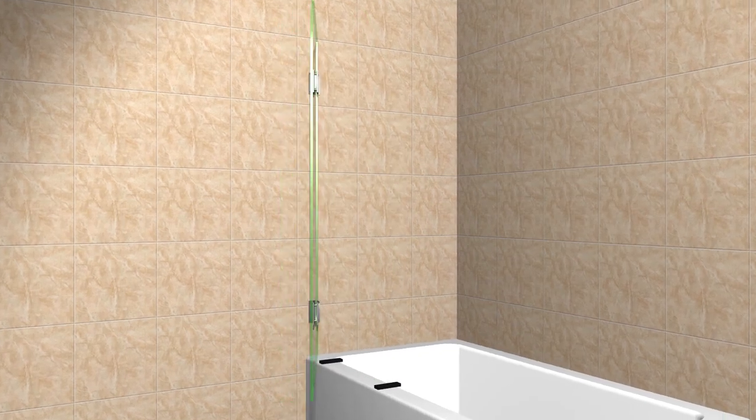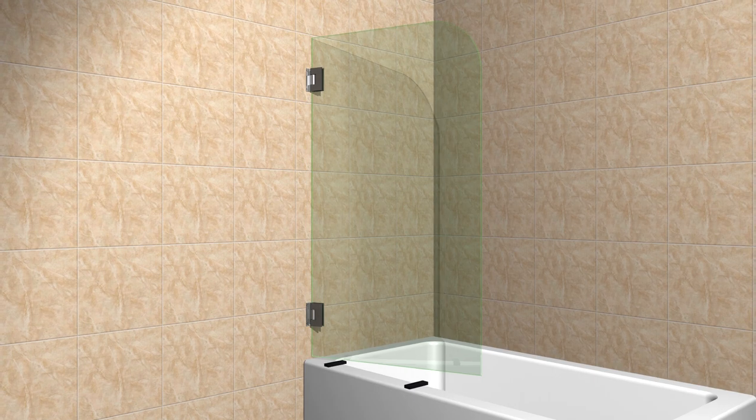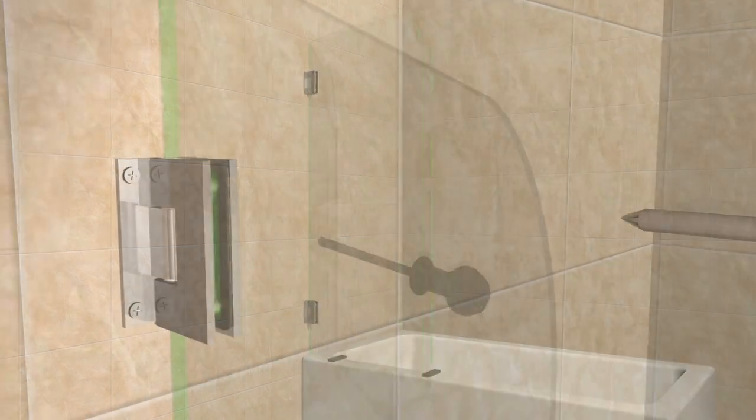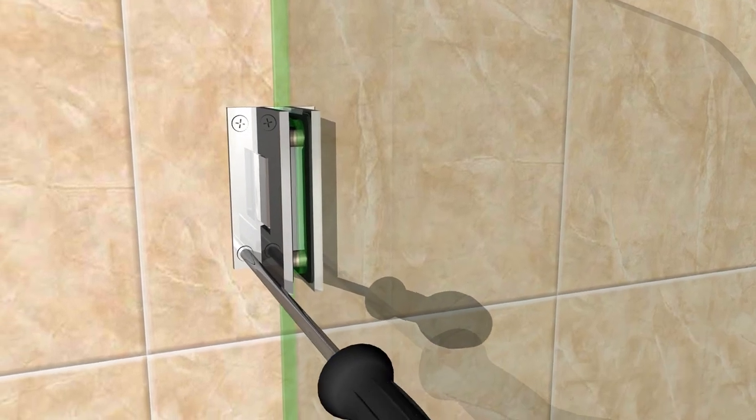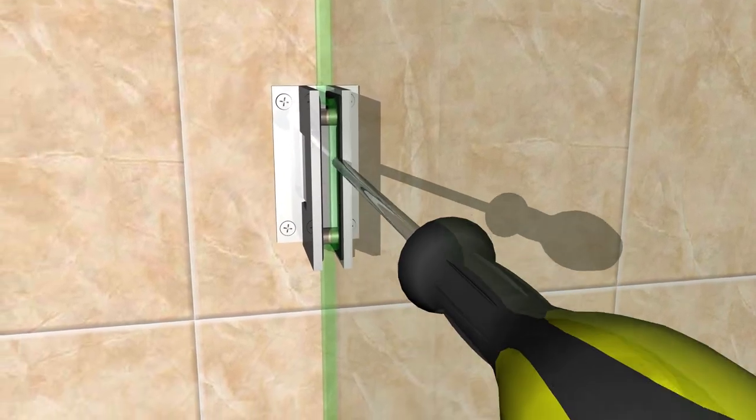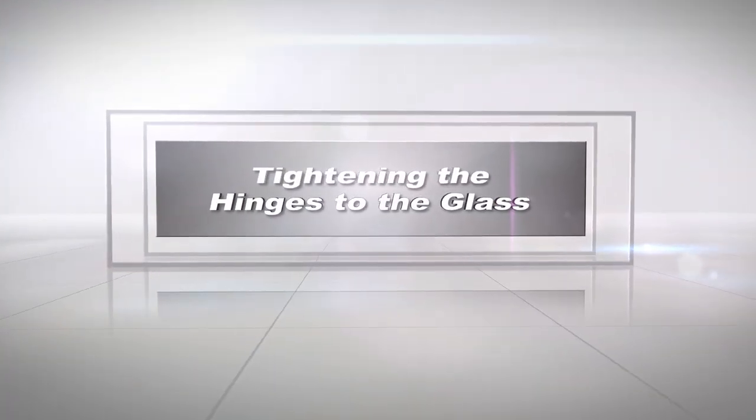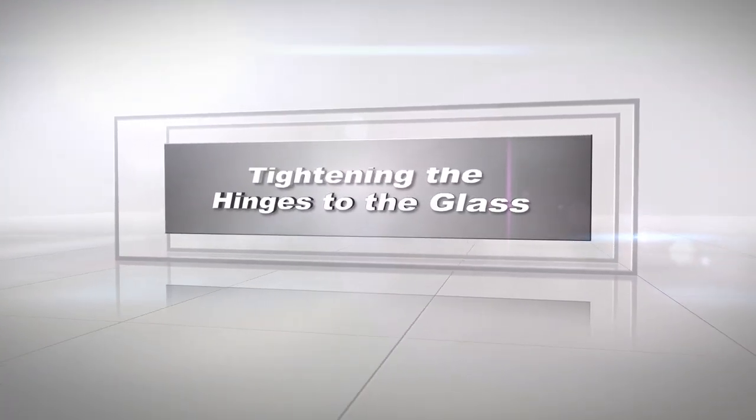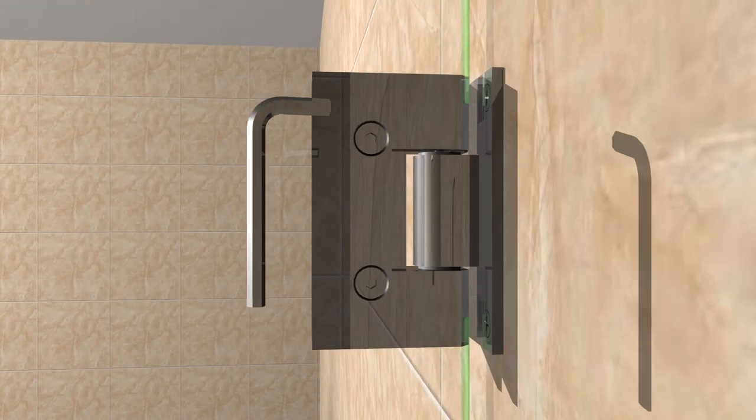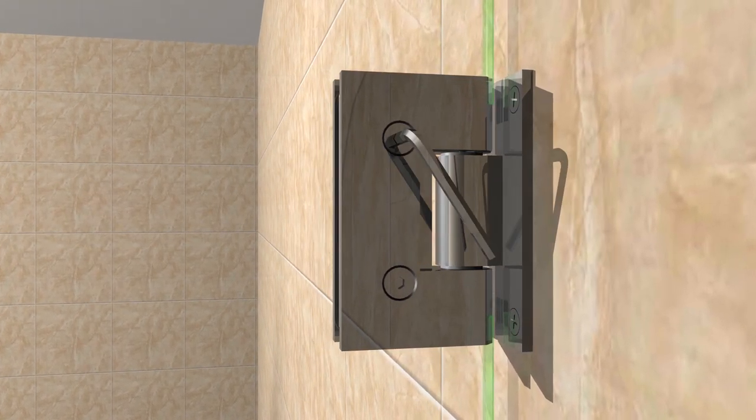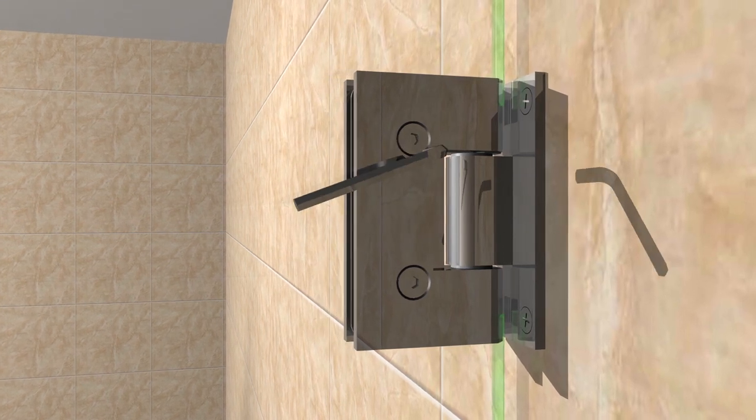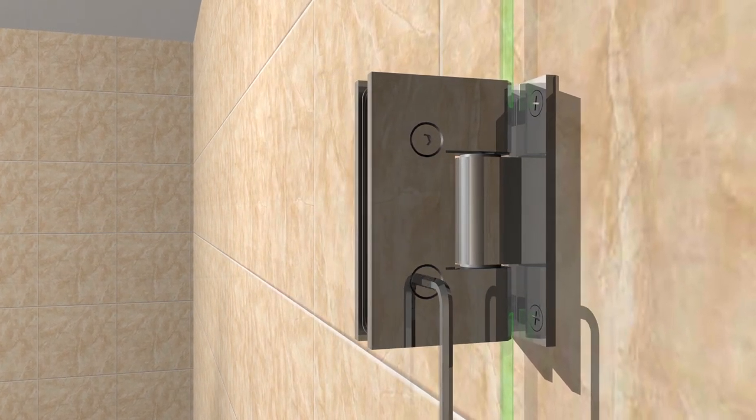Now open and close the screen a few times to ensure proper movement of the screen. Once satisfied with the screen movement, use a manual screwdriver for the final turns of the screw to make sure the hinge is completely secured to the wall. The next step is taking the included Allen wrench and tightening the hinges to the glass. Adjust and turn the Allen screws, first the top then the bottom screws to make sure the glass is secured to the hinge.